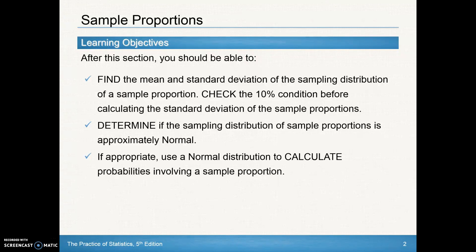We'll also determine that the sampling distribution of a sample proportion is approximately normal, so we can use the normal curves. And if appropriate, we'll use the normal distribution to calculate probabilities involving a sample proportion — we're going to have to check the conditions for using that.